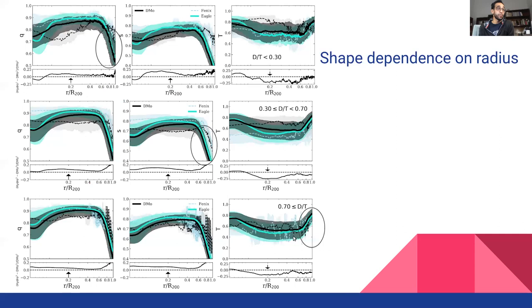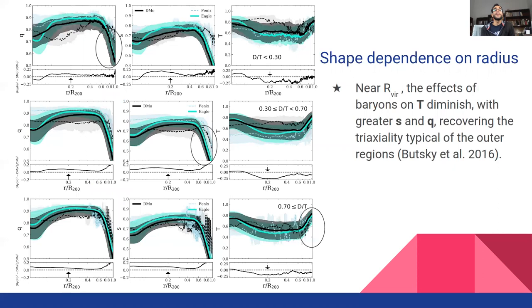Each panel includes the relative change between hydro and dark matter only halos. It can be seen that near the virial radius, the effects of baryons on triaxiality diminish, recovering the triaxiality typical of the outer regions.